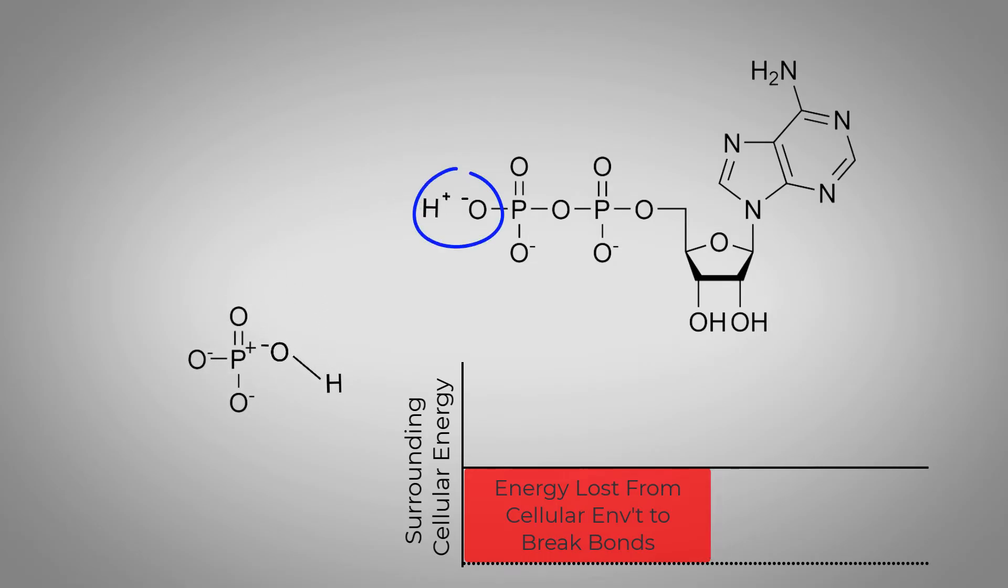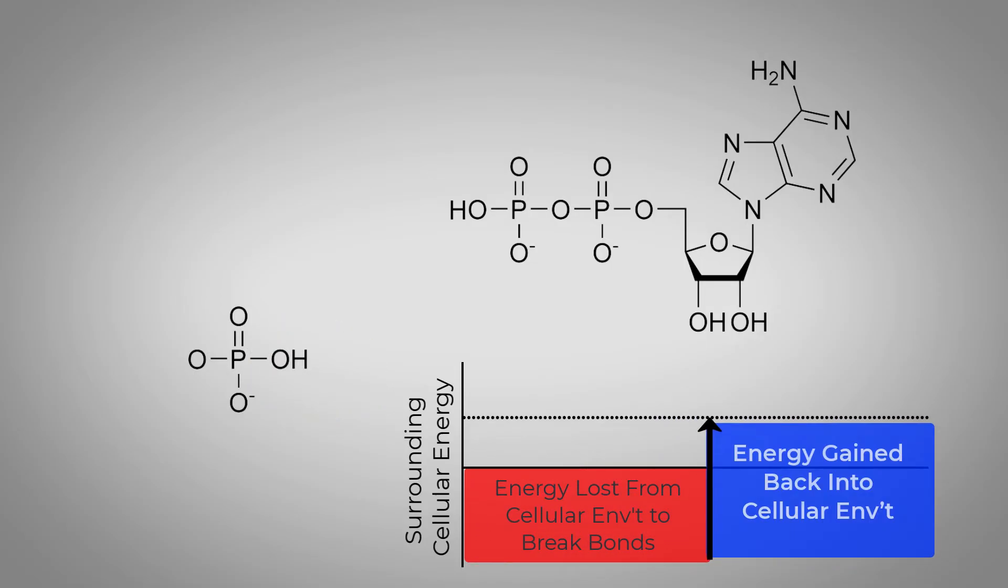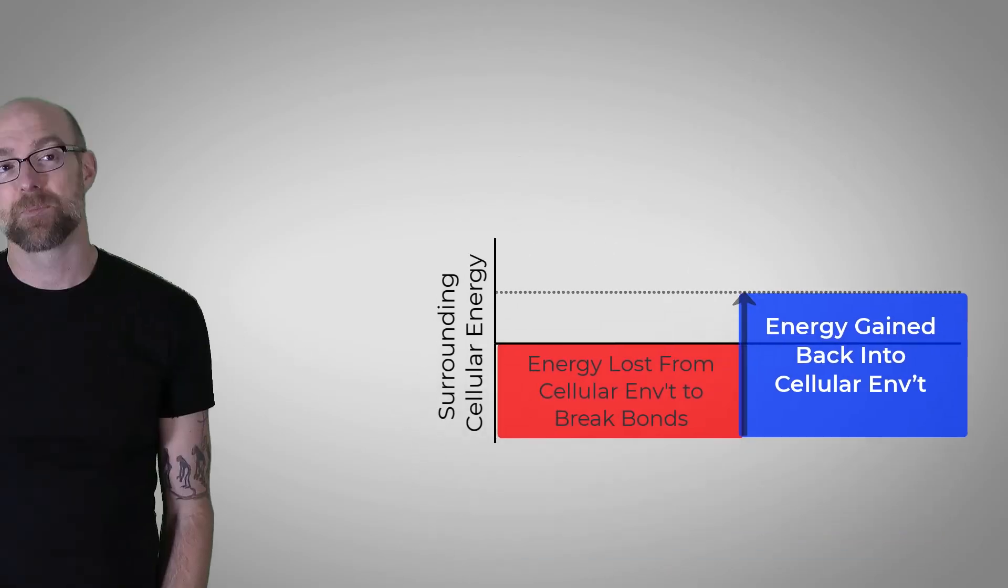But look what happens next. The free hydrogen can bond onto the open end of that ADP molecule that was left over when the phosphate came off. And the OH from water can bond with that lone phosphate. The forming of these new bonds provides energy into the surrounding cellular environment.